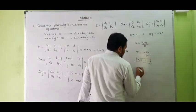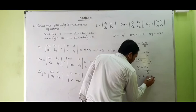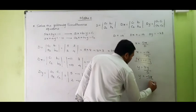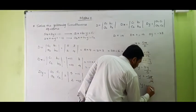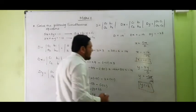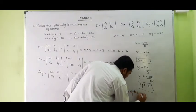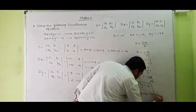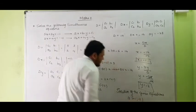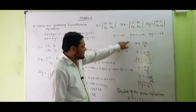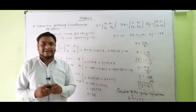Now we will find the value of Y. Y is equal to DY upon D. DY is minus 28, and D is 14, so Y equals minus 28 upon 14. Since 14 twos are 28, Y is equal to negative 2. So we have got the values X equal to negative 1 and Y equal to negative 2. The solution of the given equations is the ordered pair negative 1, negative 2. This is how we solved the simultaneous equation by Cramer's method.